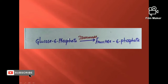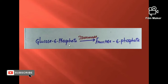In the second step, glucose-6-phosphate is converted to fructose-6-phosphate in the presence of enzyme isomerase. Glucose has only one side chain in its ring structure.